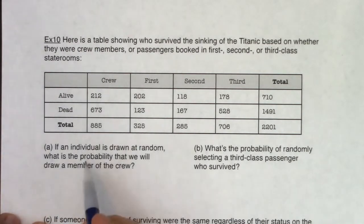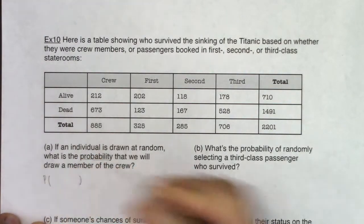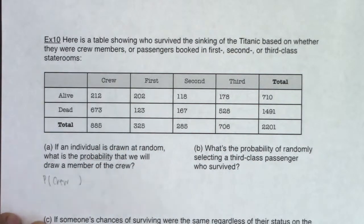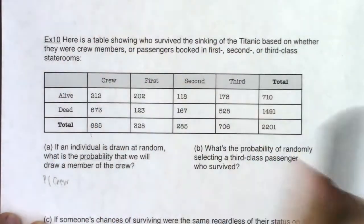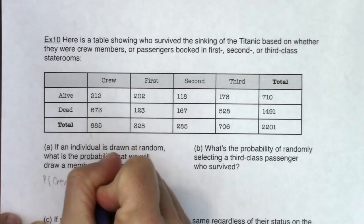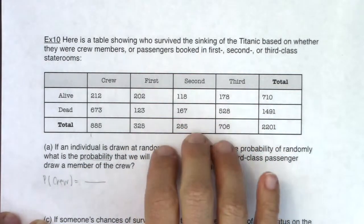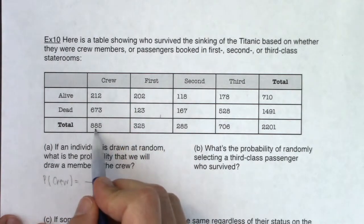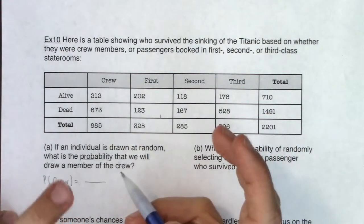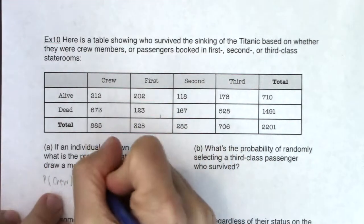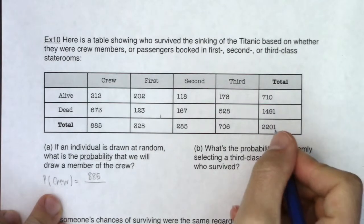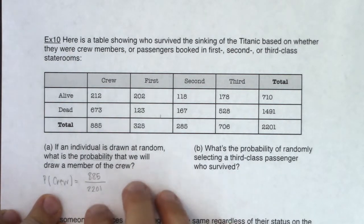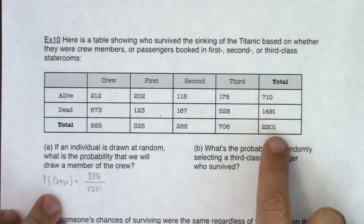Anytime you see probability, since chapter three, we've been writing capital P with some stuff in parentheses. I want the probability that I draw a crew member. Since we're working with a table, it's going to be a fraction. We did table problems back in chapter three — Venn diagrams, tree diagrams, and table problems. So let's look at how many crew members we had: 885. That's our success count — being a crew member — out of the grand total of 2,201.